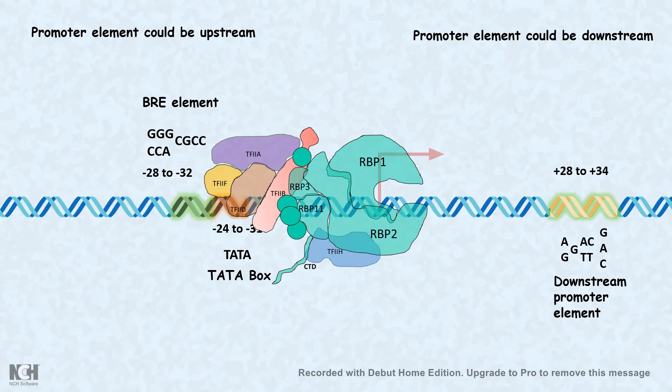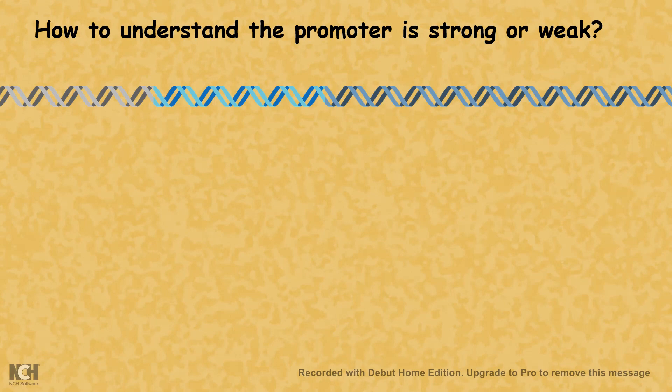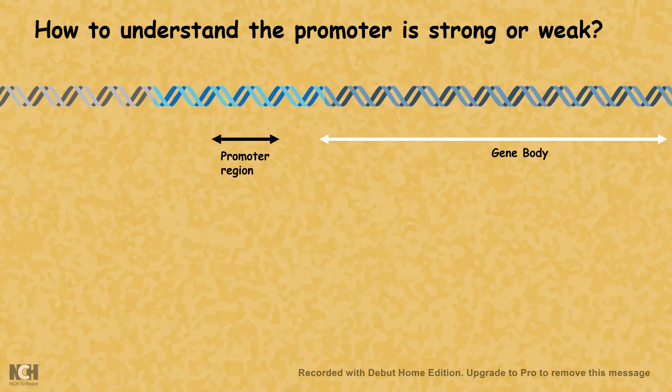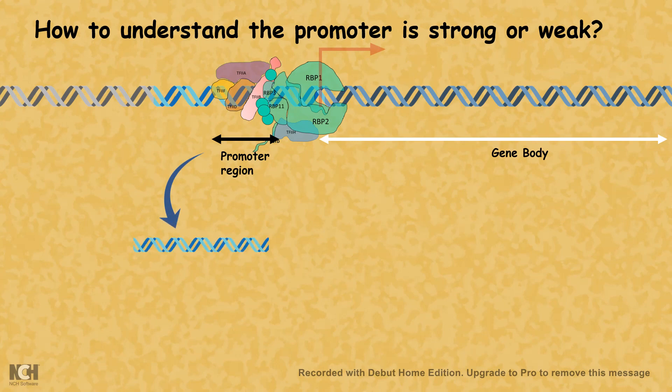Now, how do we understand whether a promoter is strong or weak? If this is a promoter region and this is a gene body region, our transcription machinery would be assembled in the promoter region near the transcription start site. We can use an in vivo or in vitro reporter assay. In a reporter assay, you amplify the sequence of the promoter.